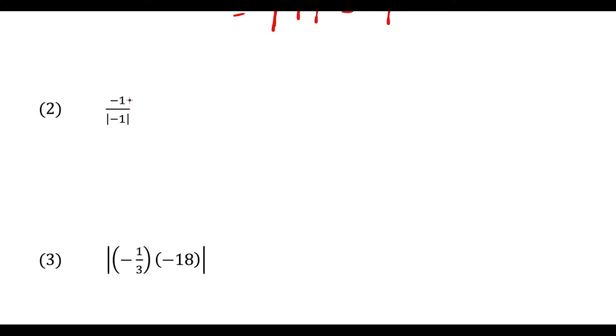Next up, we have division. We have negative one divided by the absolute value of negative one, which is positive one. So negative one divided by one is negative one.